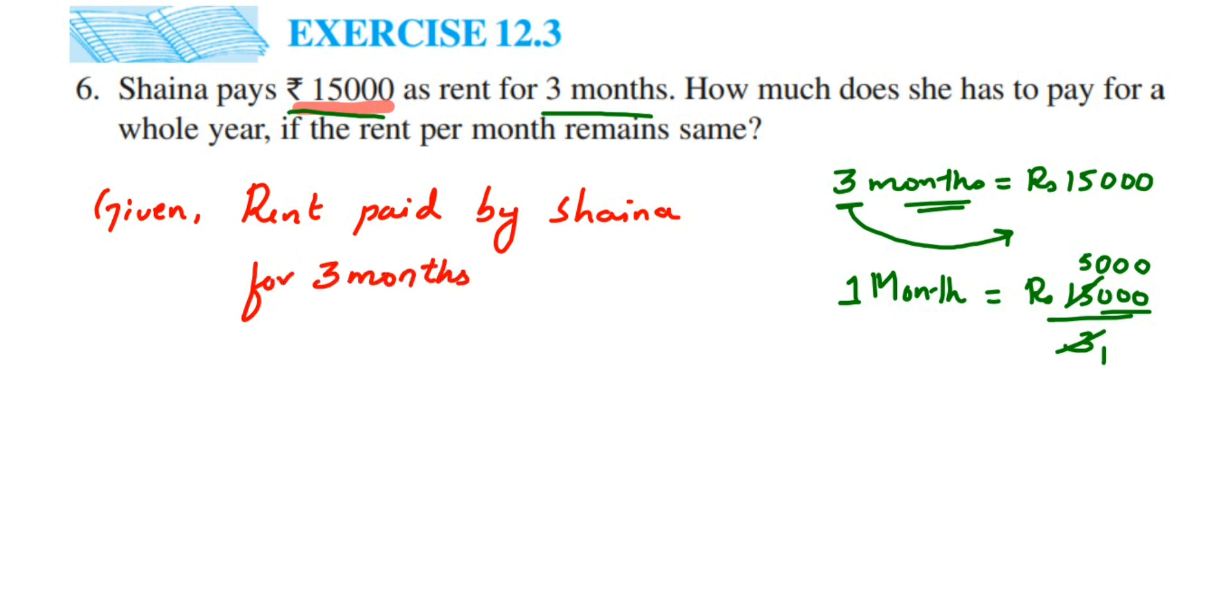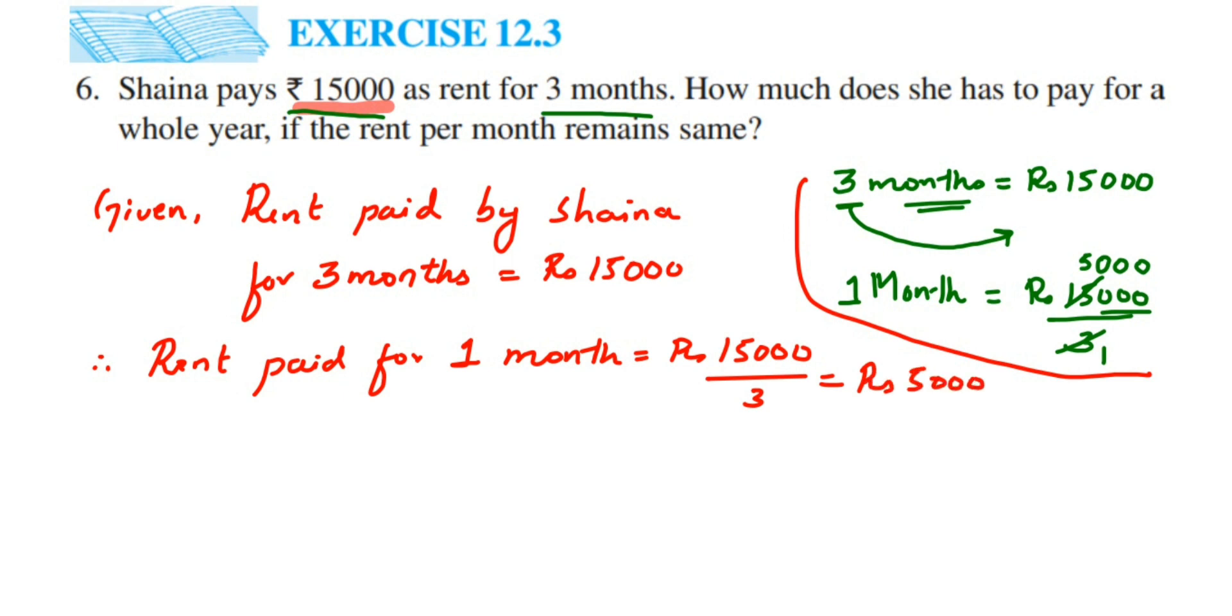Is equal to rupees 15,000. Now we have already calculated it is 5,000. Therefore, rent paid for one month will be equal to rupees 15,000 divided by 3, which is equal to rupees 5,000.